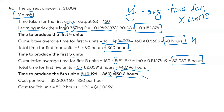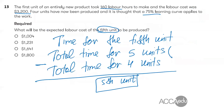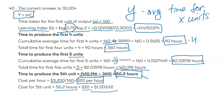Now we multiply the time for the fifth unit by the labor rate per hour. For 160 hours, we paid $3,200, implying a labor rate of $20 per hour. So for 50.2 hours, the labor cost is approximately $1,004.